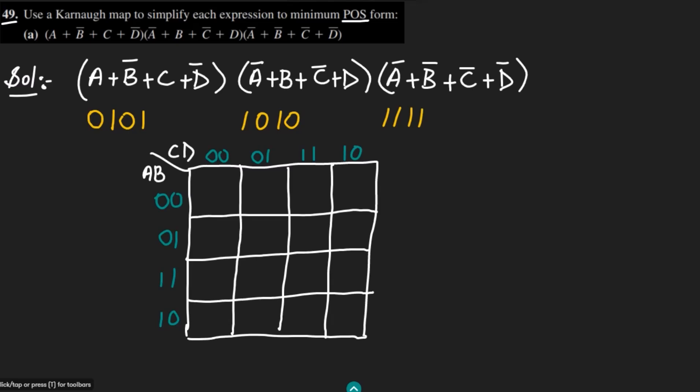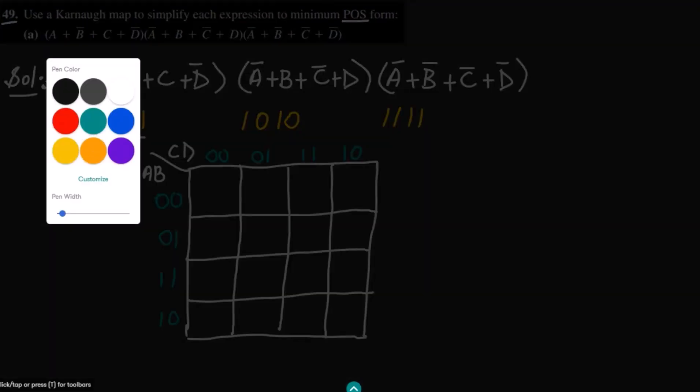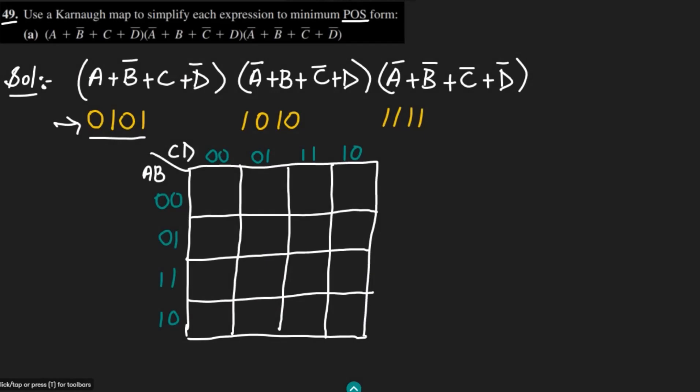These are the cells and now writing the values of 0 for all the binary values which we have got. This is the first value 0101. 0101 is here, let me write 0 here. Similarly 1010 is here and 1111 is here.